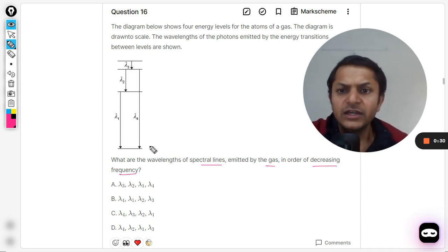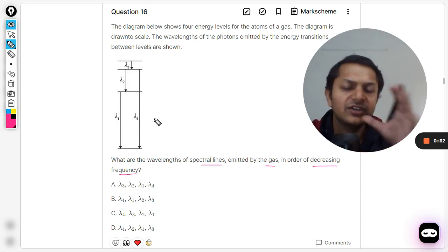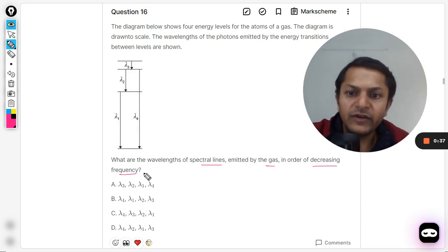Lambda 1, lambda 2, lambda 3 is just for the sake of telling which transition you're talking about. But we have to arrange these energies into the order of decreasing frequency, which means decreasing energy. So decreasing frequency means that the energy gap should be decreasing.